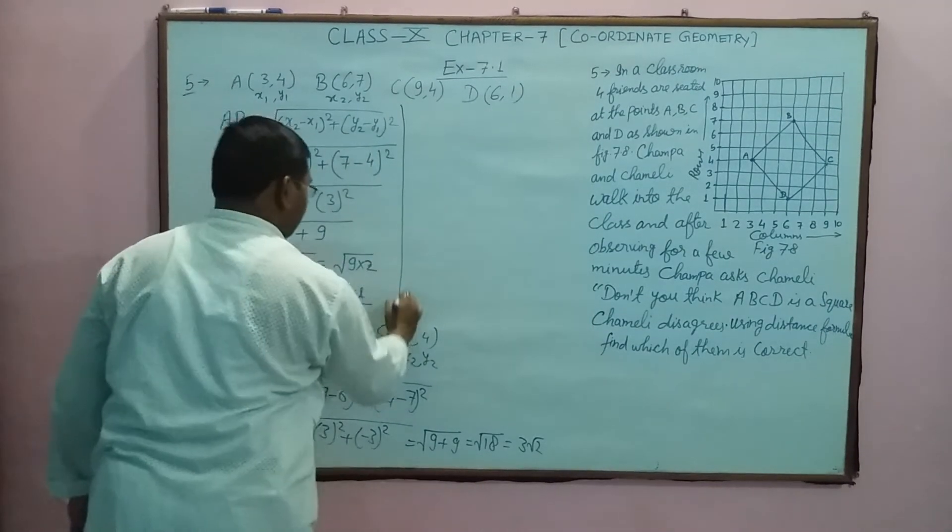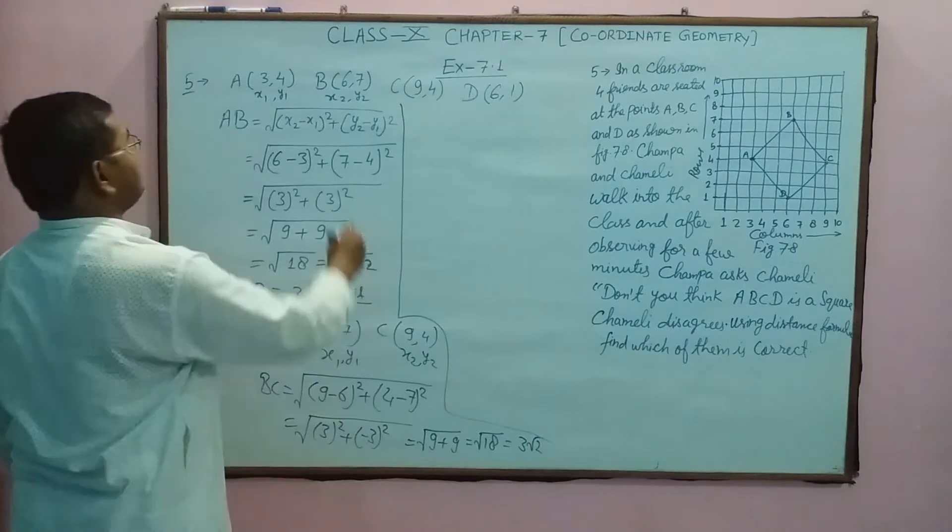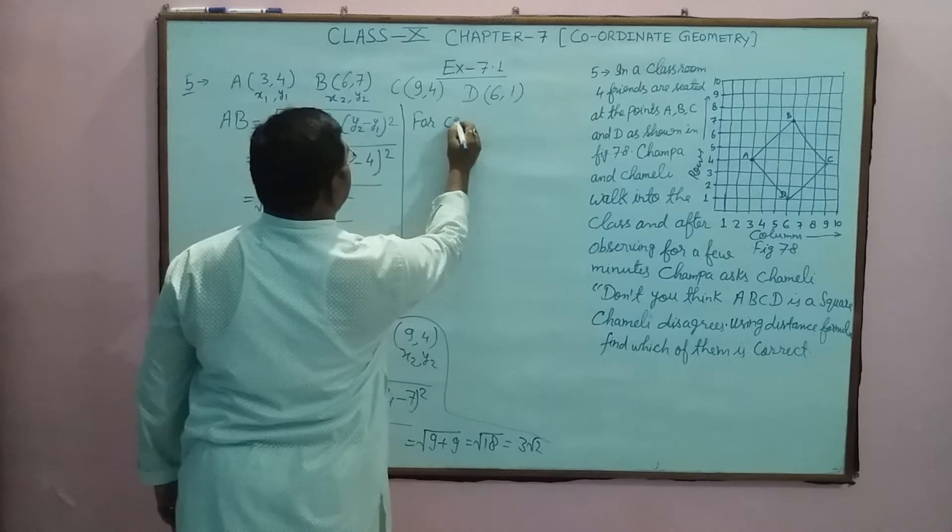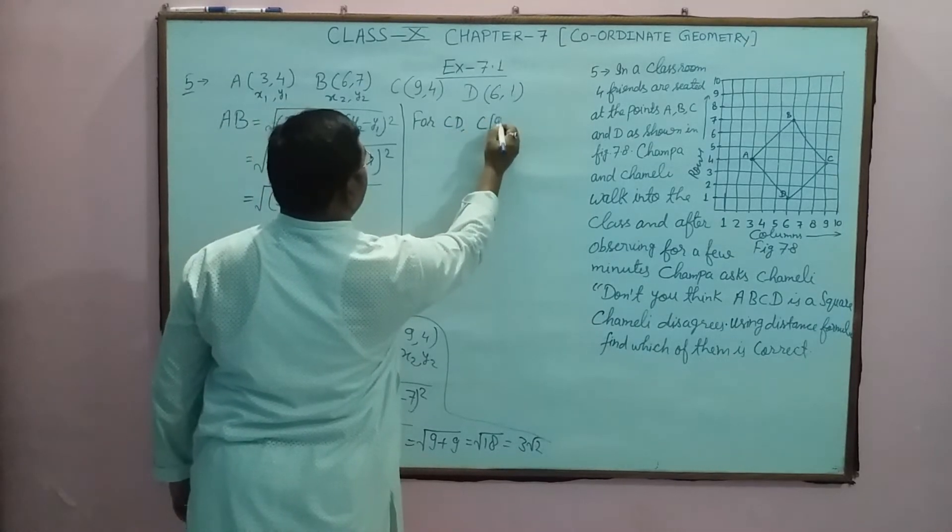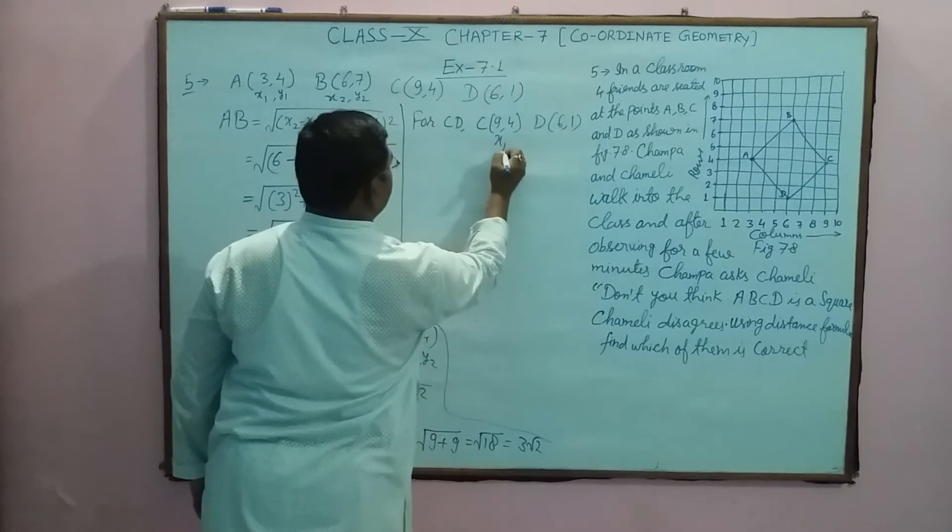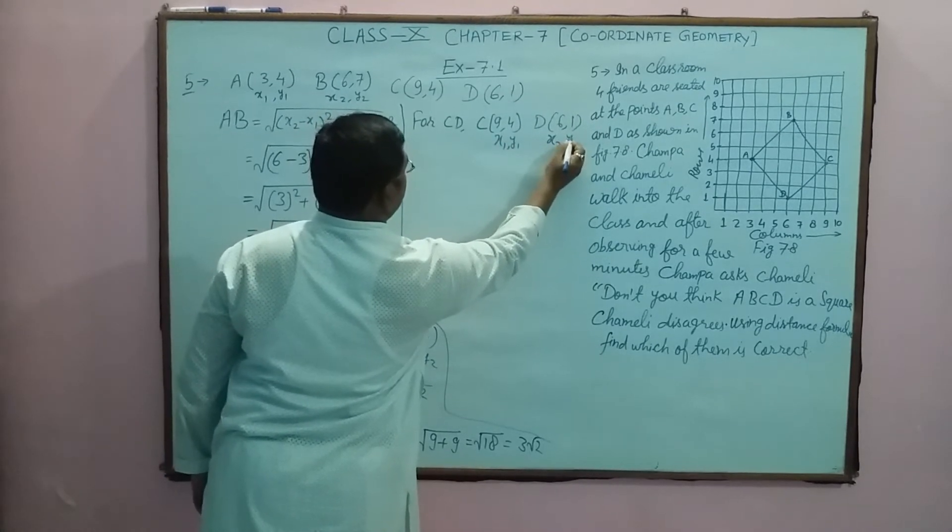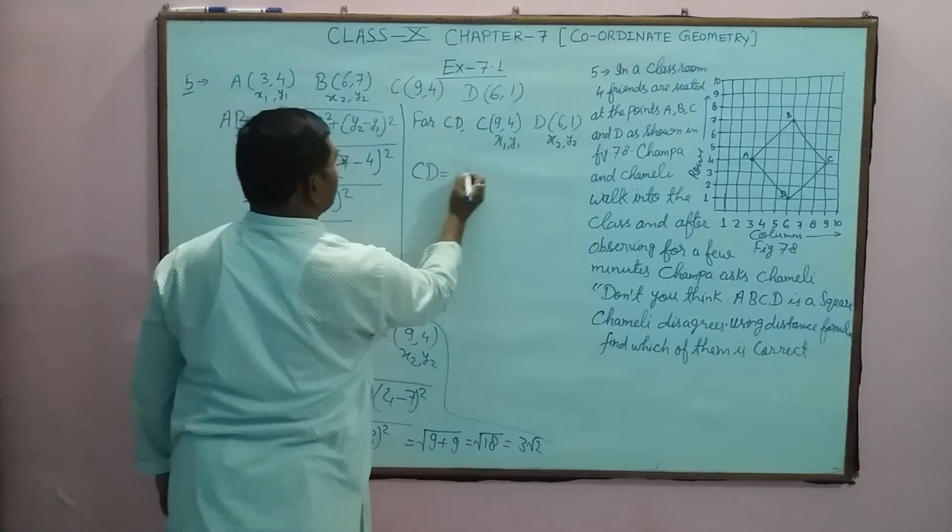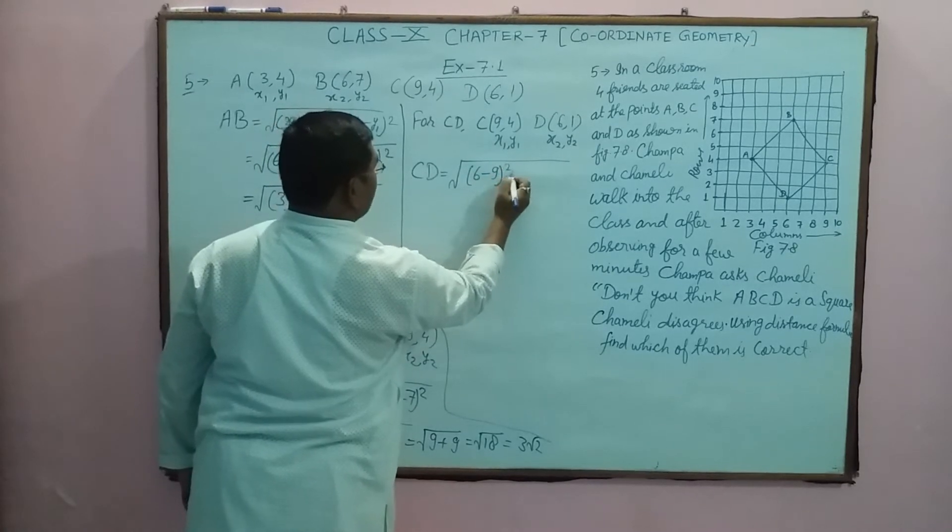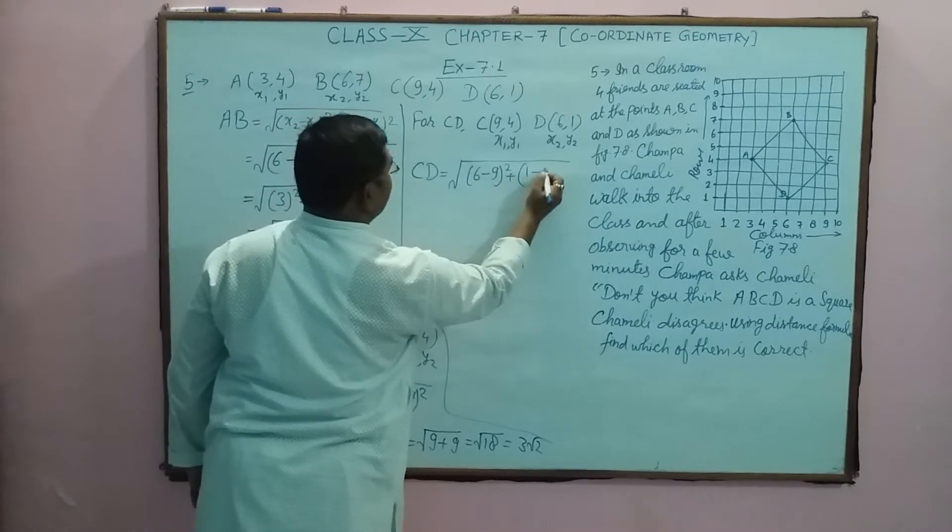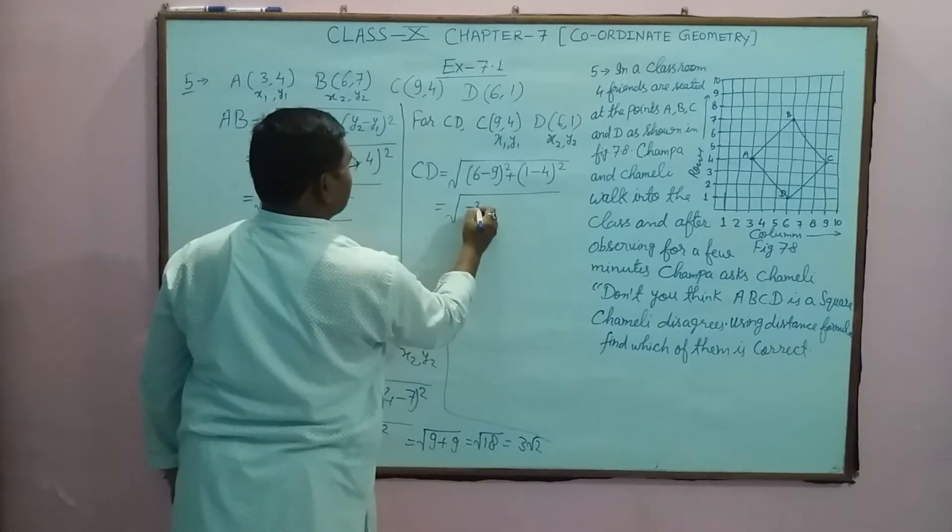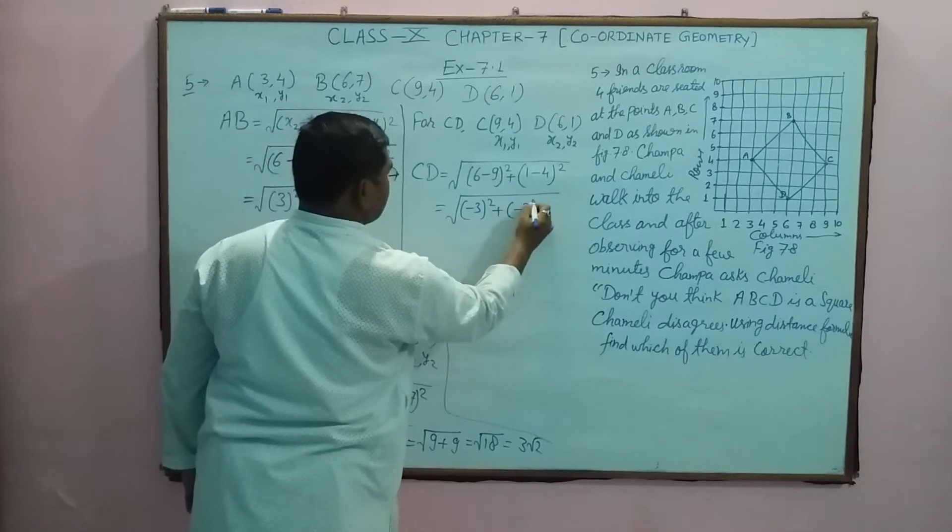Now find CD. For CD, C coordinate is (9,4) to (6,1). This is x1, y1; this is x2, y2. Now find CD equals root of x2 is 6, x1 is 9, square of this, plus y2 is 1, y1 is 4.